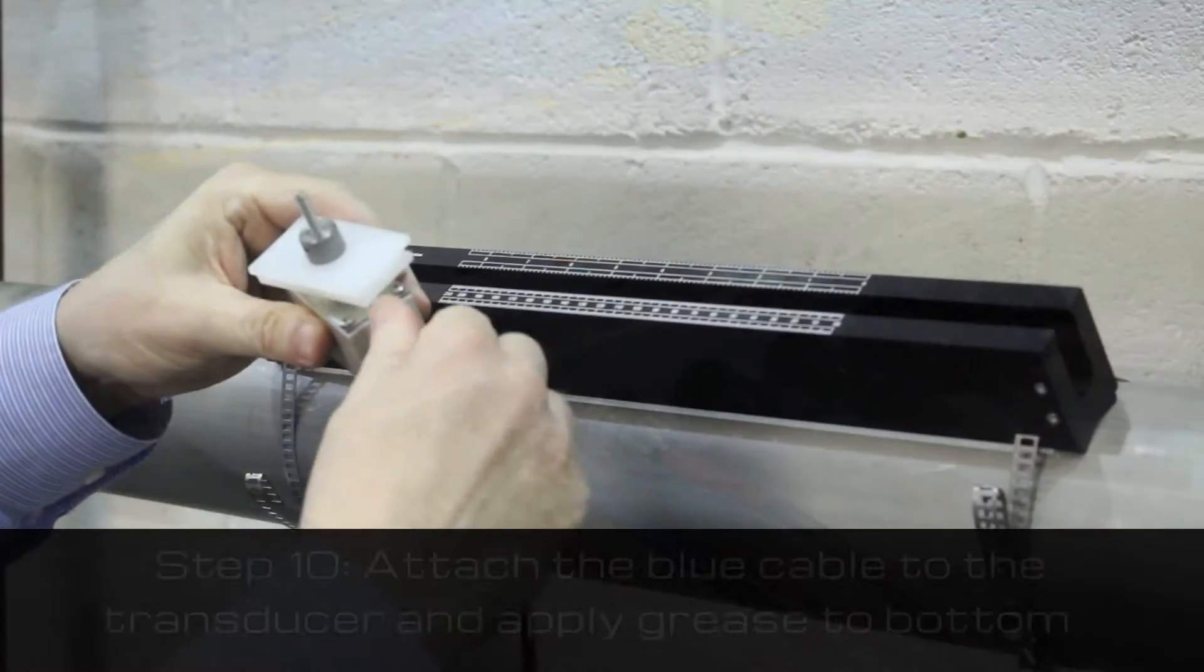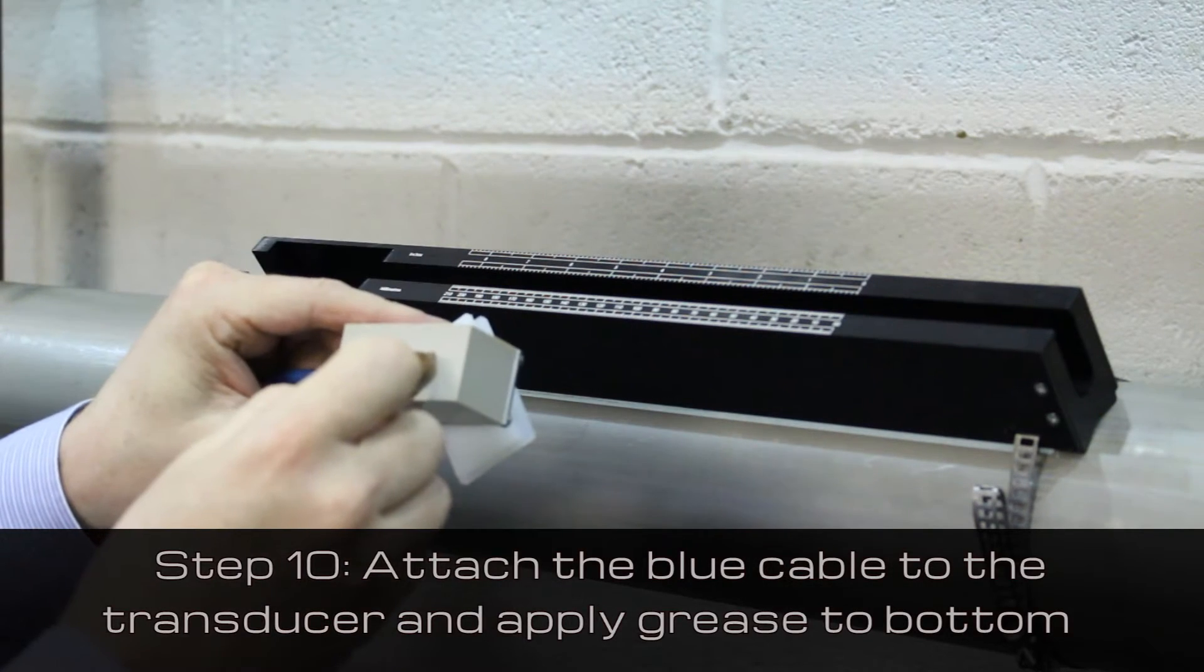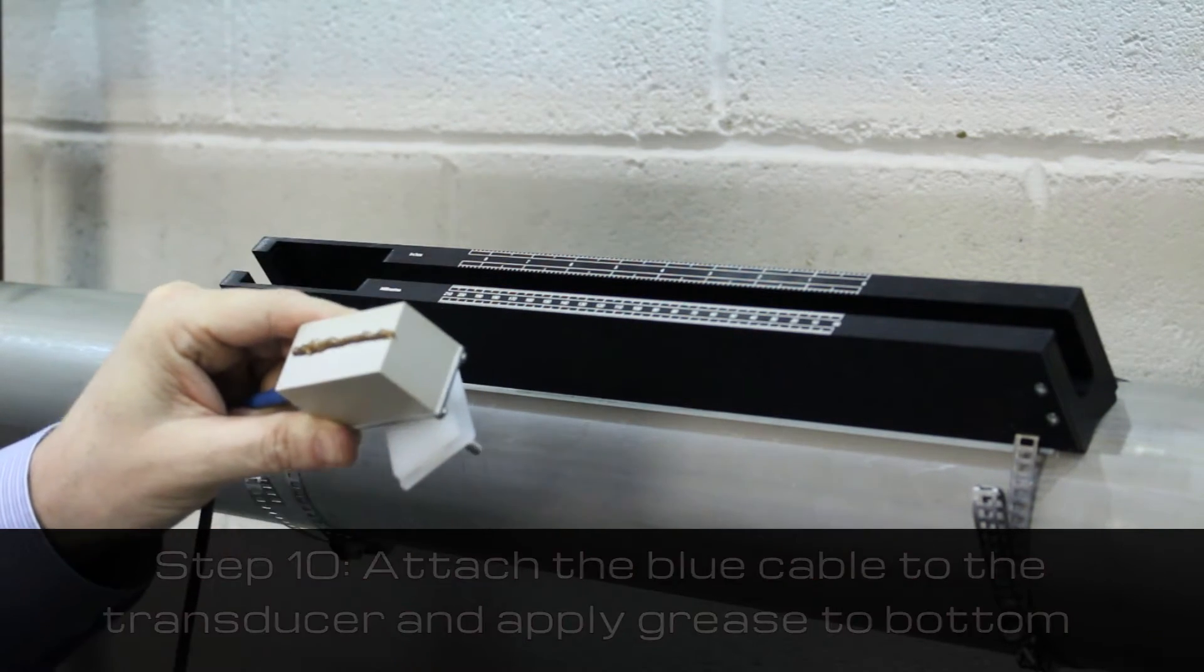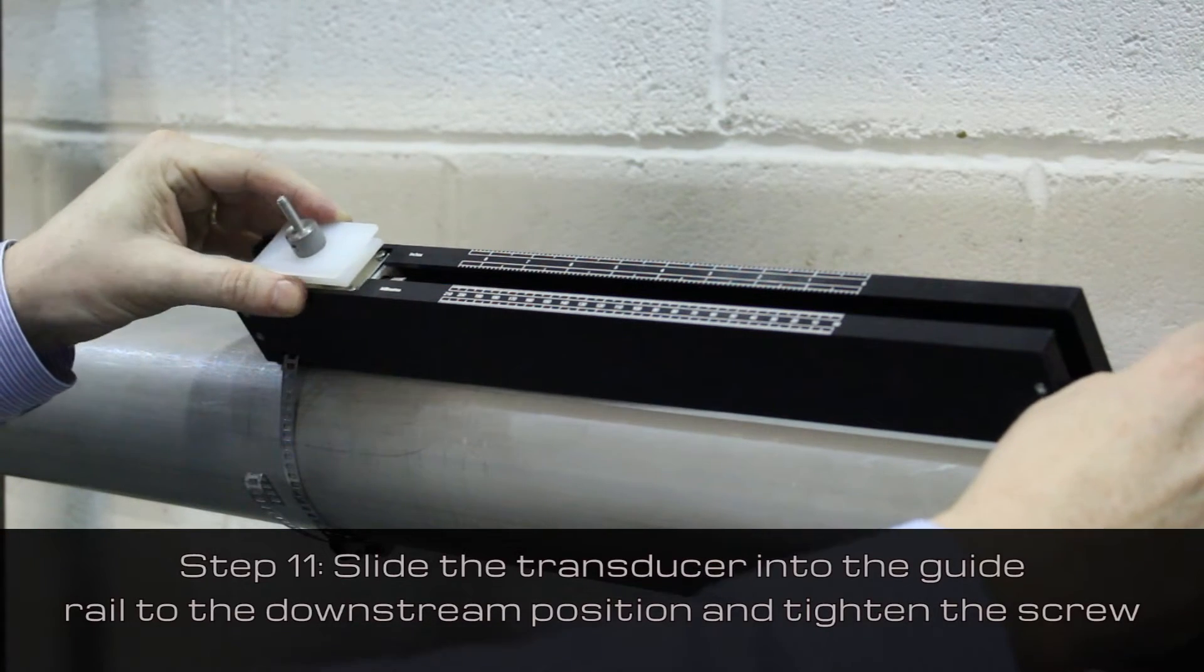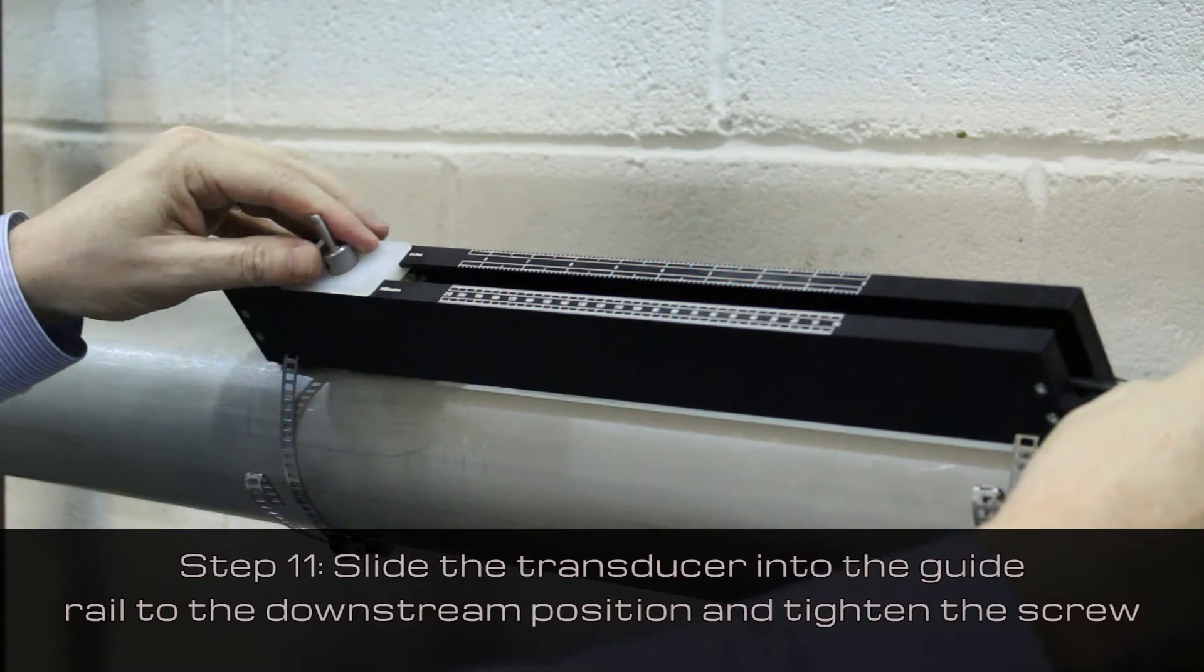Attach the transducer cables to the side of the meter. Attach the other end of the blue cable to the transducer. Apply grease to the bottom and slide the transducer into the guide rail in the downstream position.